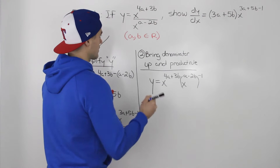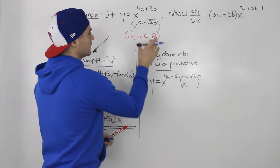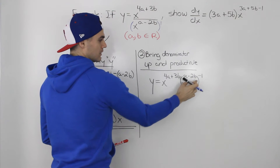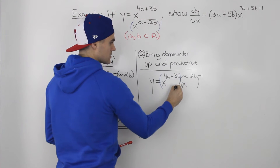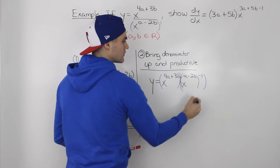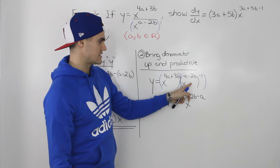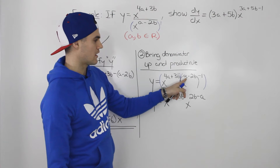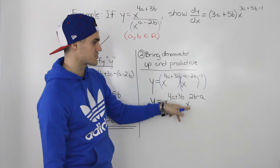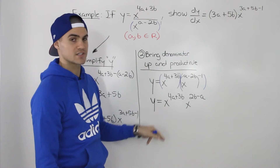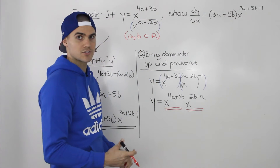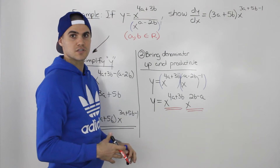Notice that the whole expression in the denominator is like to the power of 1. If we bring it up to the numerator, that 1 becomes a negative 1. Now we have two functions: x to the power of 4a plus 3b, and x to the power of a minus 2b, all to the power of negative 1. We can simplify this second part by distributing that negative 1 into a minus 2b — the signs switch, leaving us with negative a plus 2b, or 2b minus a. So y equals these two functions multiplied by each other, and we can use the product rule.